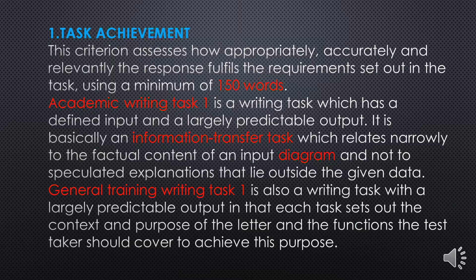Task Achievement assesses how appropriately, accurately, and relevantly the response fulfills the requirements set out in the task, using a minimum of 150 words. For academic writing Task 1, it is basically an information transfer task which relates narrowly to the factual content of an input diagram, and not to speculated explanations that lie outside the given data. It means you will give the provided information and not information based on your own knowledge.